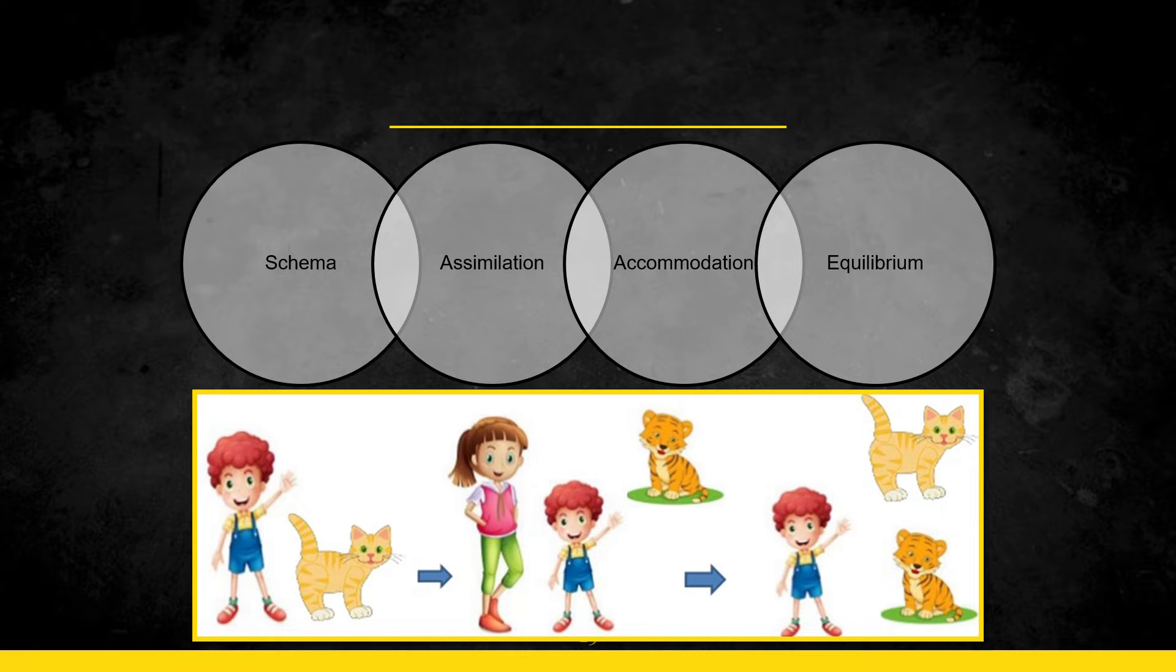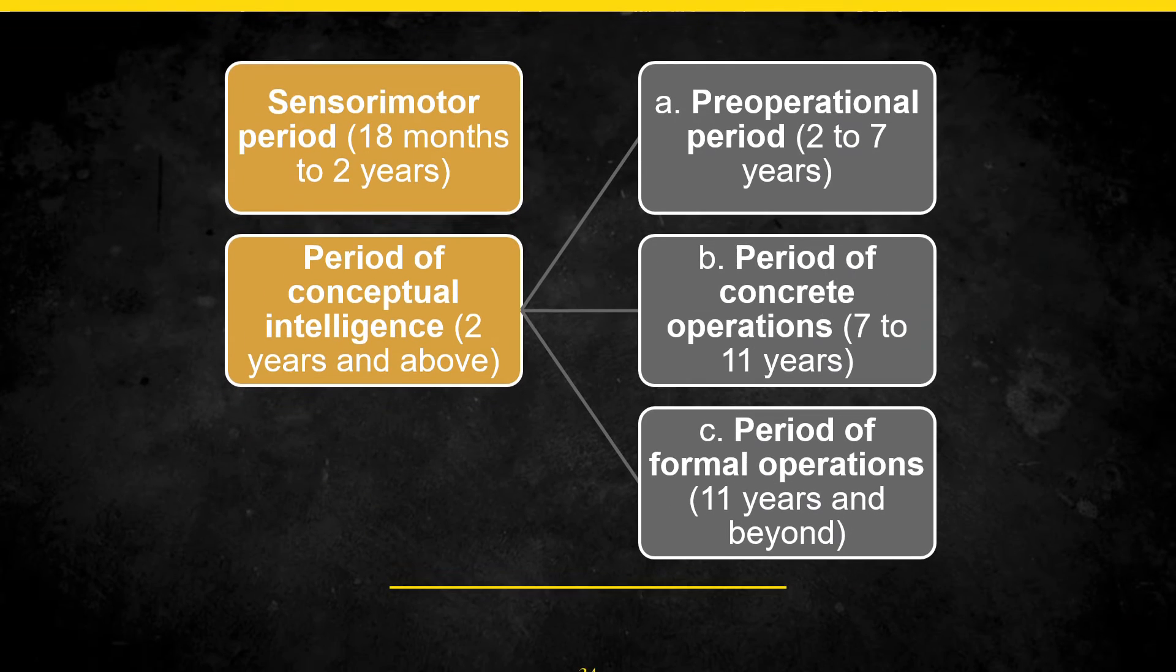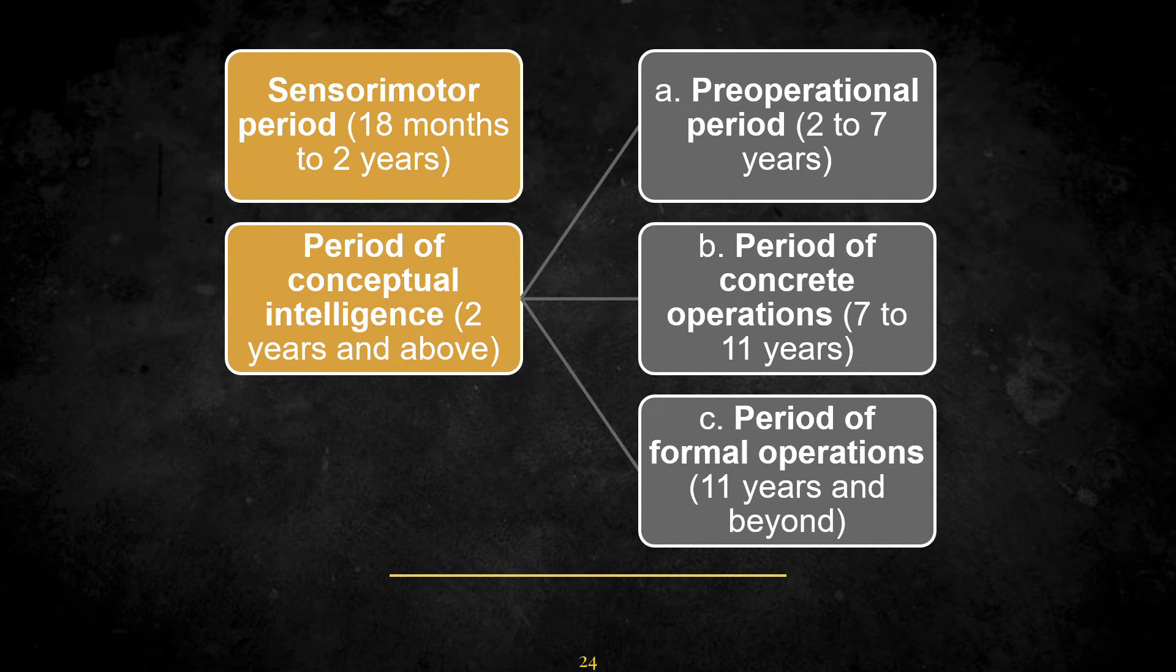So those are the four main concepts that are inculcated in the cognition: schema, assimilation, accommodation, and equilibrium. Now moving on to Piaget's theory, he divided basically his entire theory into two main periods. He said that the child goes through these phases. The first is the sensory motor period. Now the sensory motor period lasts somewhere from 18 months to two years of age. And then there is a period of conceptual intelligence which is two years and above.